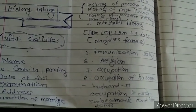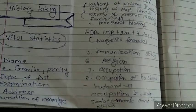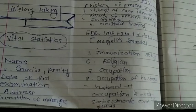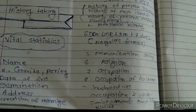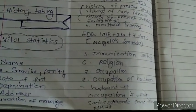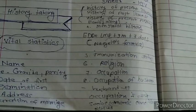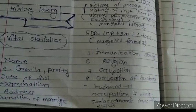The occupation of the husband and the economic status of the family are also recorded as part of the social history.